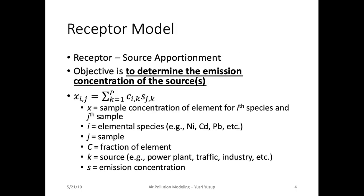The receptor model — another name for it is the source apportionment model. The objective of this model is to determine the emission concentration of a source or multiple sources. This model can be summarized using this equation, where x is the sample concentration for the ith species and the jth sample, equals the summation of the fraction of the ith species from the kth source multiplied with the emission concentration s for the jth sample and from the kth source.